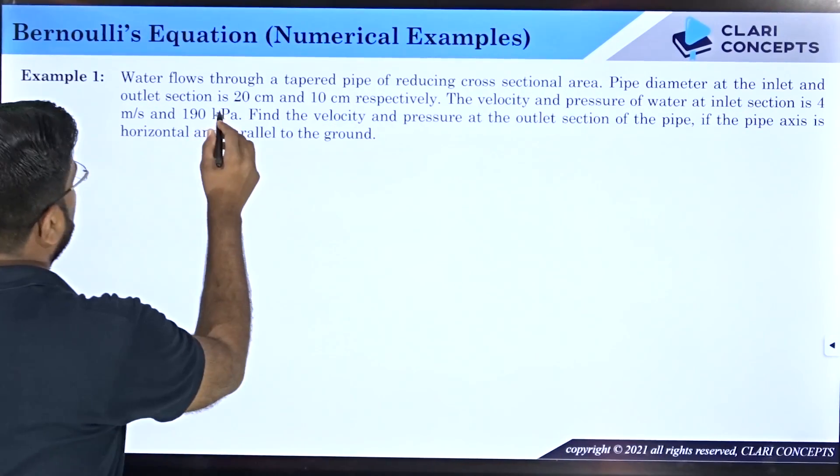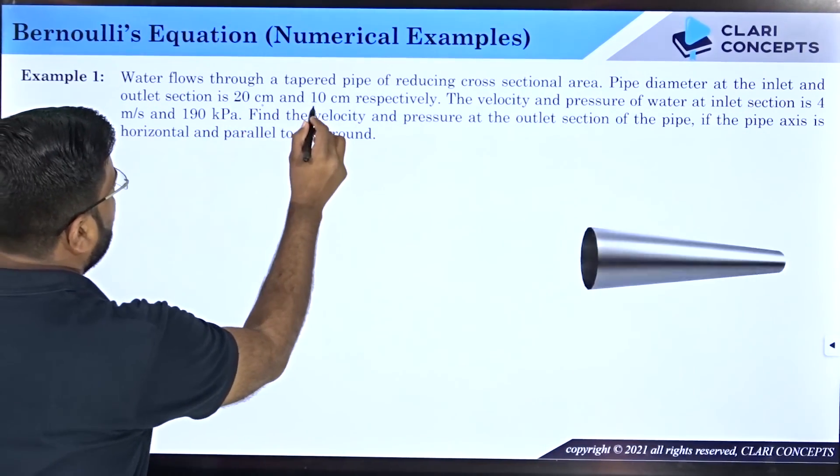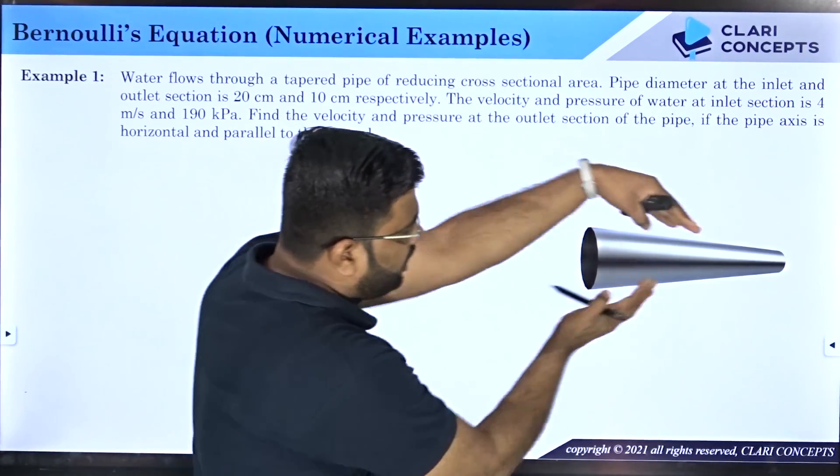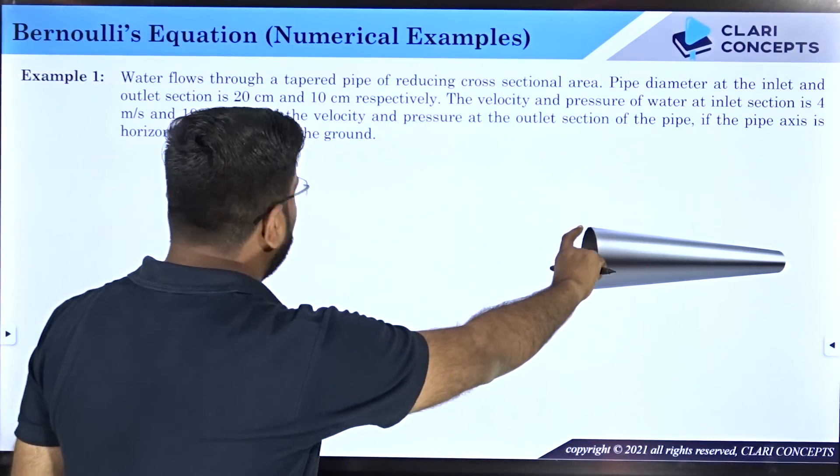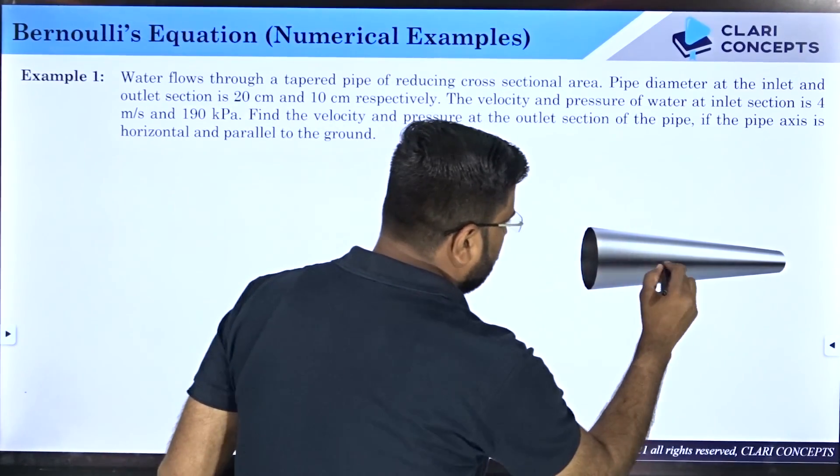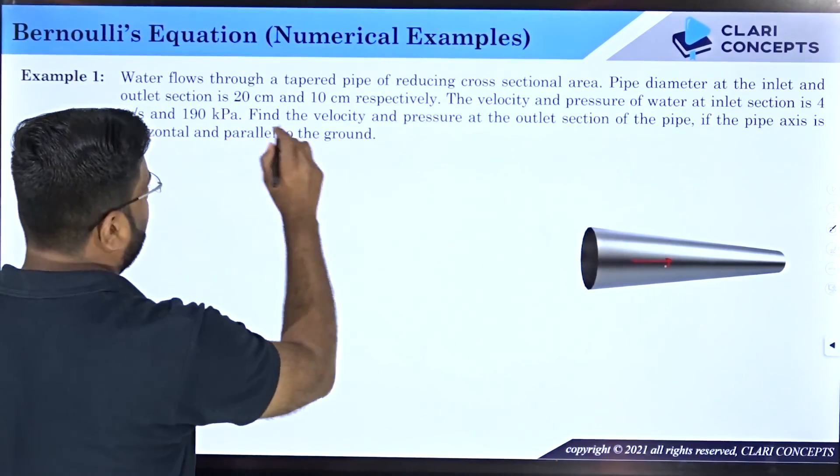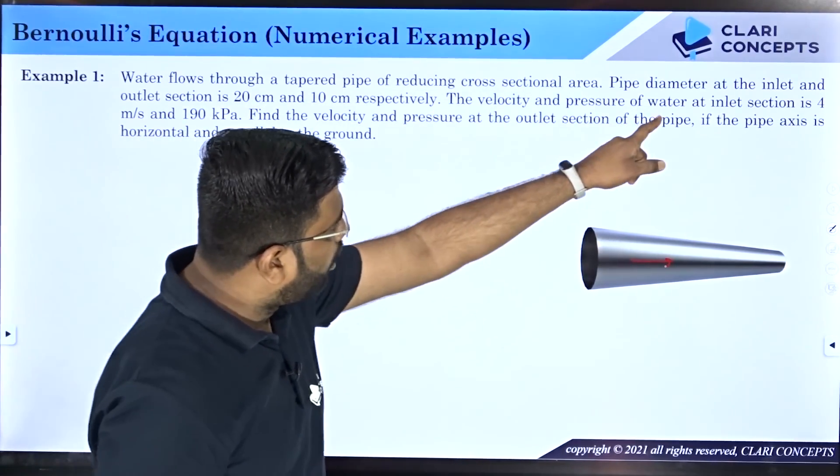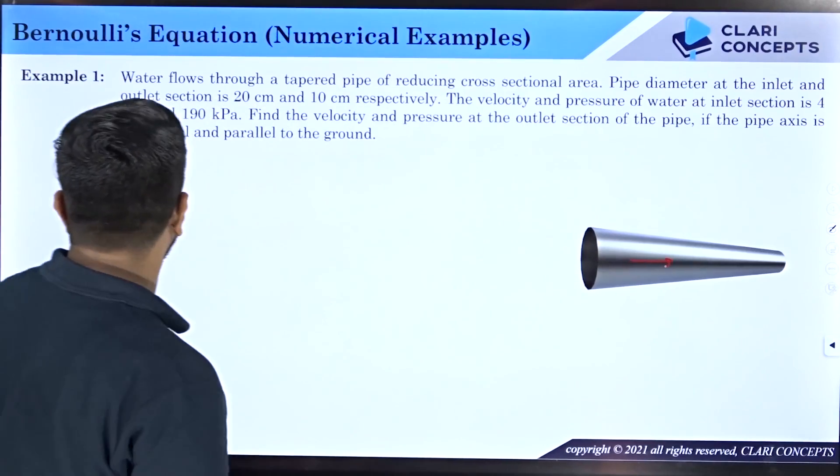What I have been given is a pipe which is a tapered section. The pipe diameter at the inlet, if fluid is flowing from left to right, that inlet diameter is 20 centimeters and outlet diameter is 10 centimeters. The velocity and pressure of water at inlet is 4 meters per second and 190 kPa.